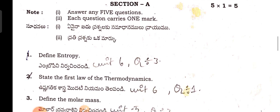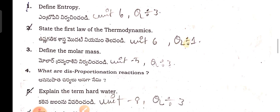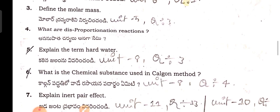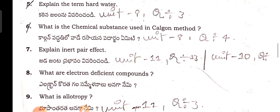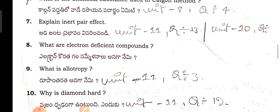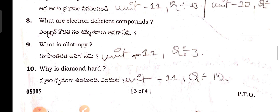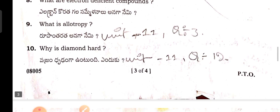Next, moving on to the chemistry paper. Define entropy. State Hess's law. Thermodynamics terms: molar mass. Precipitation reactions. Hard water and soft water. What is the chemical substance used in the Solvay method? Explain the inert pair effect. What are the electron deficient compounds? Electrophiles. Allotropy — diamond and graphite.